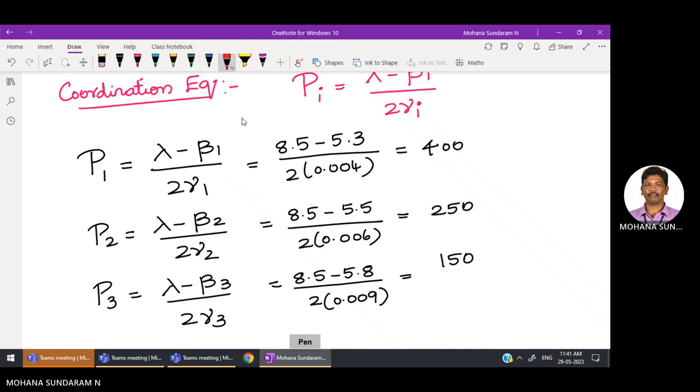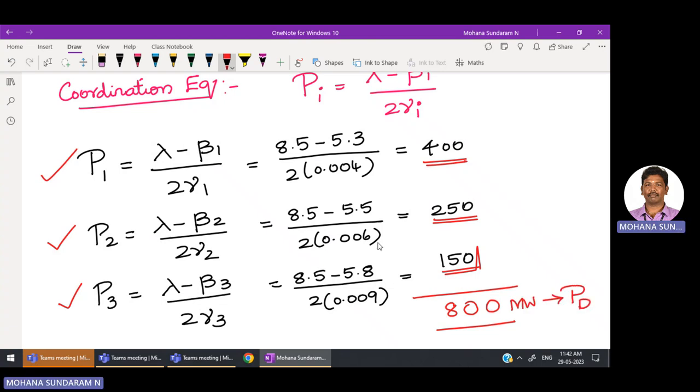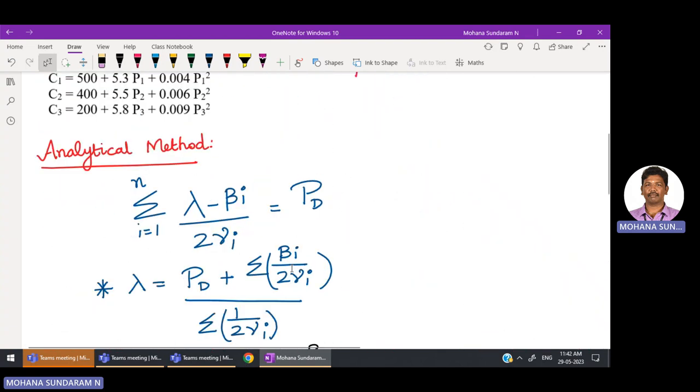So what do you understand from this? In order to get the lowest operating cost, you have to operate power plant 1 to generate 400 megawatts, power plant 2 to generate 250 megawatts, and power plant 3 to generate 150 megawatts. All together, it is 800 megawatts, so our load demand is met. This is the optimal way of operating the three power plants so that the entire total operating cost will be the least one.